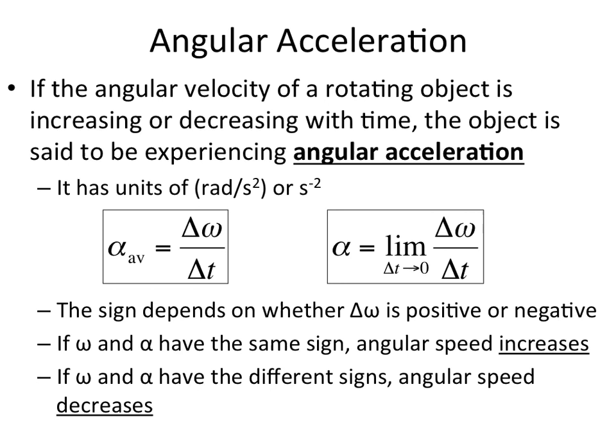Welcome back everybody. We've been talking about rotational kinematics and mentioning displacement around the edge of a circle — that is angular displacement and angular velocity. And just like in regular one-dimensional linear kinematics, we not only have displacement and velocity, but we also have acceleration. And now we have angular acceleration around the edge of a circle, which is our analog to regular acceleration in 1D kinematics.